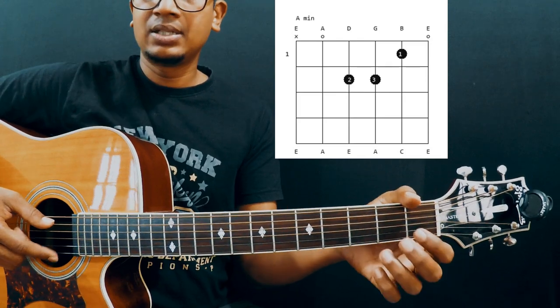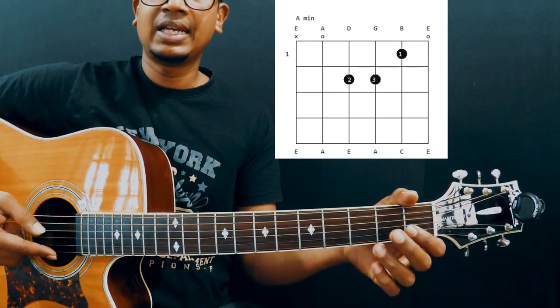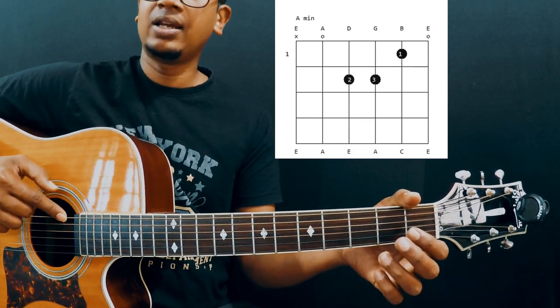Alright, the strings are numbered in this way guys: 1, 2, 3, 4, 5 and 6. E, B, G, D, A, E.